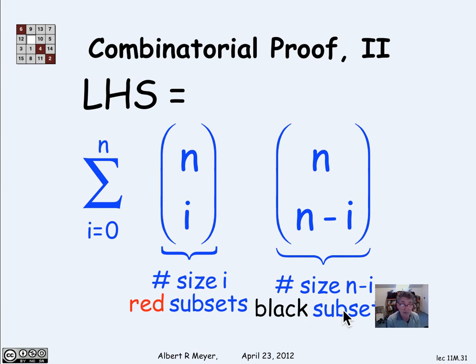If it has i reds, then it has n minus i blacks. And the number of such subsets that have i reds and n minus i blacks is simply the number of ways to choose i of the reds times the number of ways to choose n minus i of the blacks. That's really an application of the product rule.